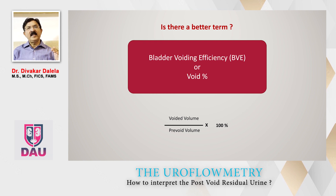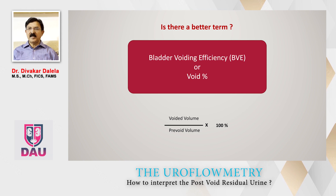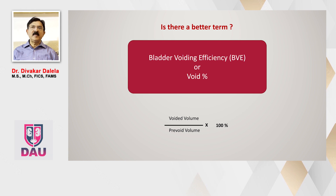If somebody began voiding at 300 ml and left behind 100 ml PVRU, it is 30%. On both patients, post-void residual urinary volume is 100, but percentage of bladder volume is different. Bladder voiding efficiency is a better term — calculated by dividing voided volume by pre-void volume multiplied by 100. Nonetheless, PVRU is a very common and popular terminology and despite this deficiency, this term is in vogue.